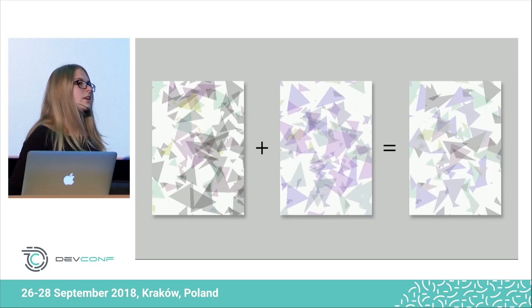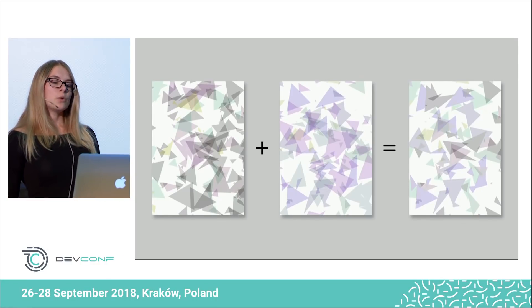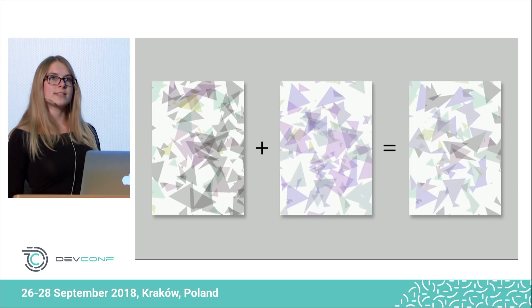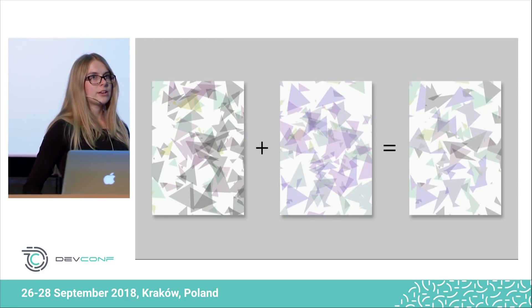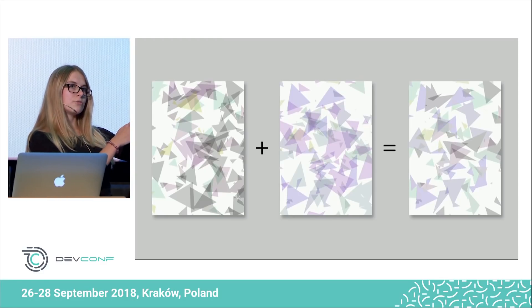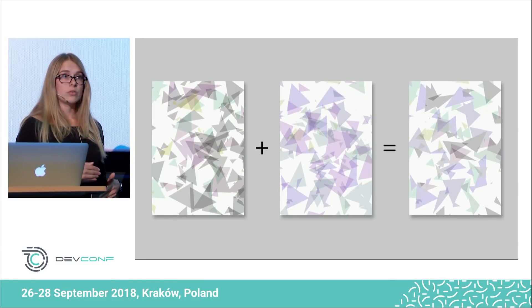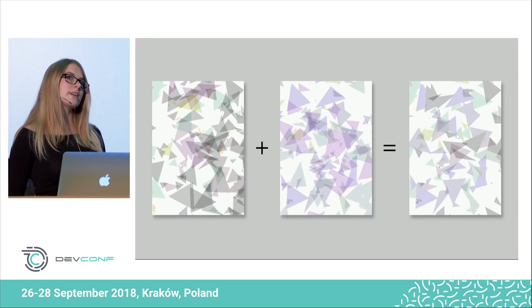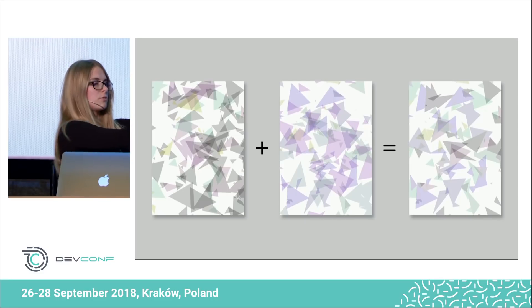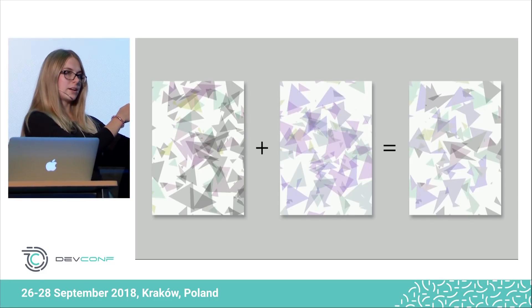So now let's talk about how babies are made. We can do it in several ways. We can let fate decide whether each triangle is going to come from mother or from father. Or we can take the first half of triangles from mother and the second half from father. Or we can split the triangles of the parents' image into sections and take the first section from mother, then from father, then from mother again, and so on.